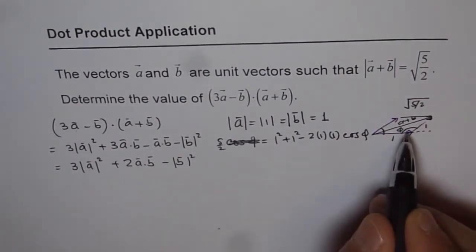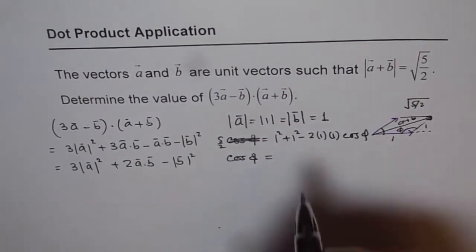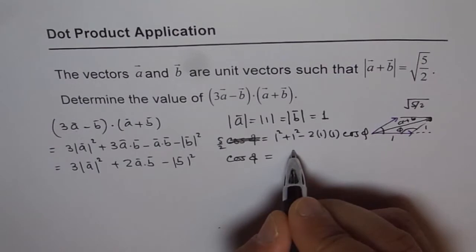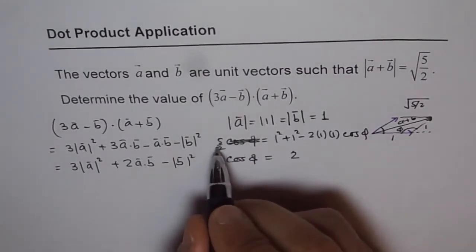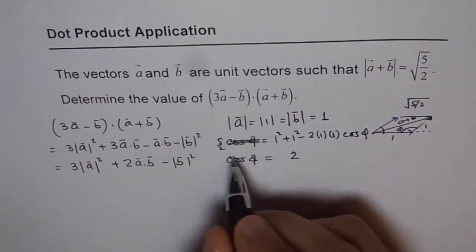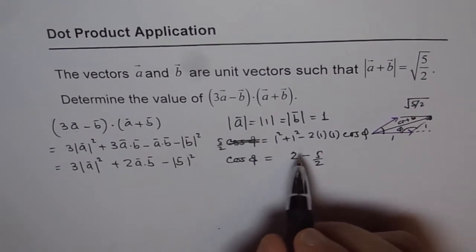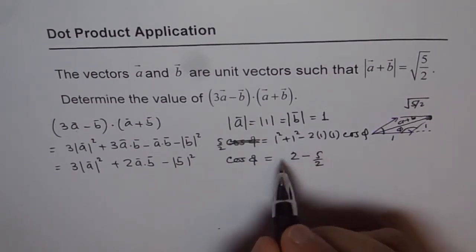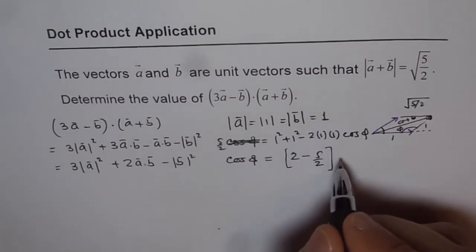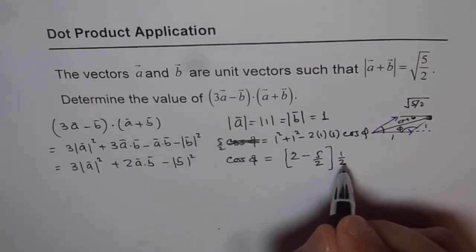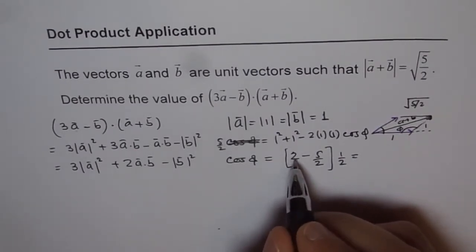So you can always rearrange and find the angle phi. So we get cos of phi is equal to 1 plus 1, which is 2, and then we will bring this to the right side and this term to the left. 2 minus 5 over 2 divided by, so when we bring this on the side, divide it by half. That becomes cos of phi, so this is equal to 2 times 2 is 4.